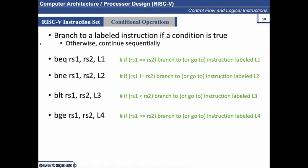BEQ corresponds to branch if equal — branch if the value in RS1 and RS2 are equal, branch to L1. BNE is branch if not equal, when these two values are not equal. BLT is branch if less than, if the contents of RS1 are less than RS2. Similarly, BGE is branch if greater or equal, when RS1 is greater or equal to RS2.